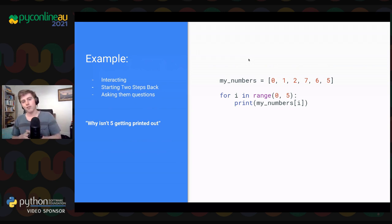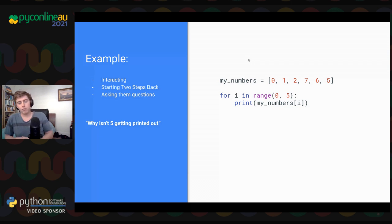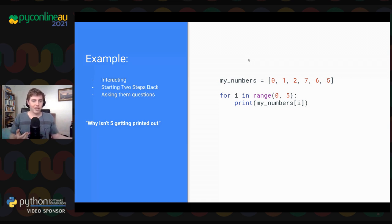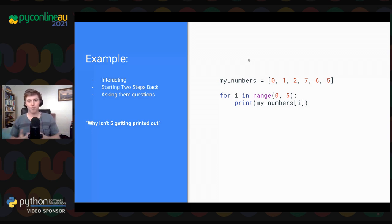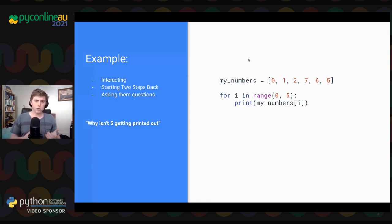Here's another example: a list with six numbers, trying to print out five of them. They ask why the last five isn't getting printed. The answer is because the range statement goes from zero up to five but not including five. You could just say 'change the five to a six,' but asking 'what are you trying to do?' and hearing 'I'm trying to print out my numbers' opens up better solutions — like using 'for number in my_numbers' instead of 'for i in range,' or even printing the whole array. Asking the right questions grows their mental model.